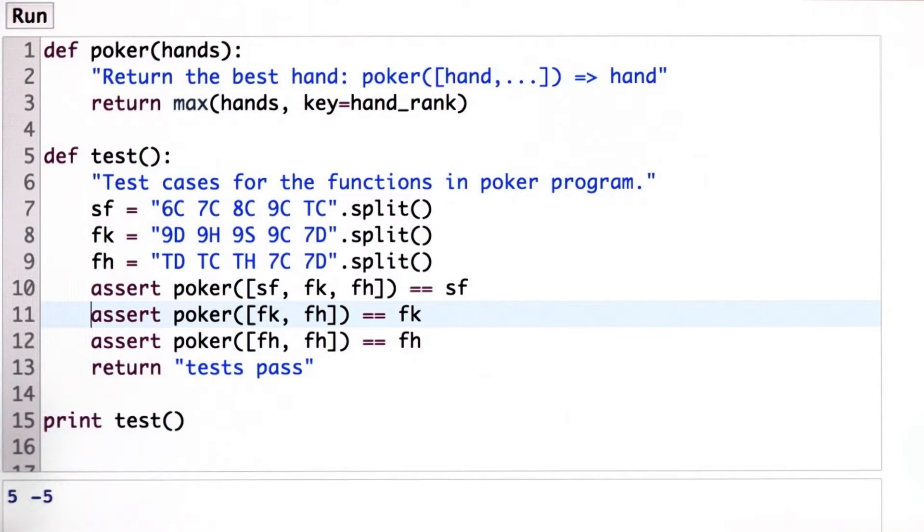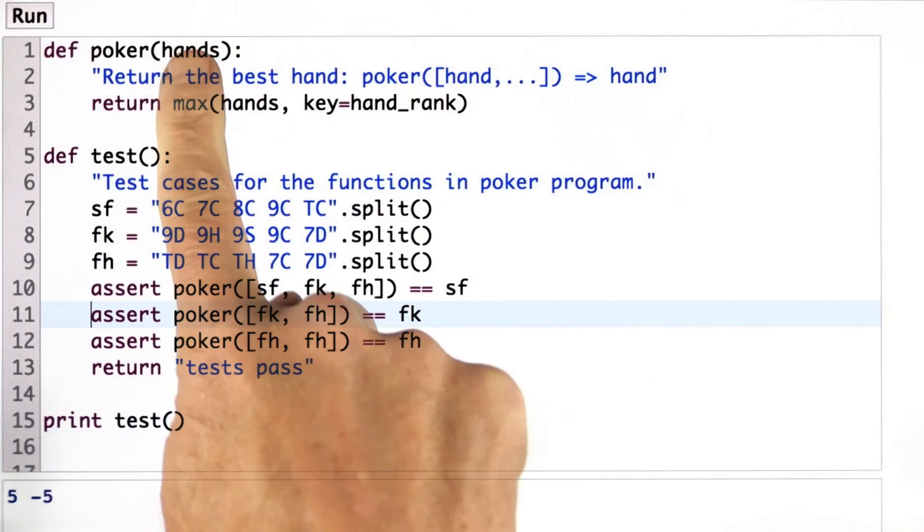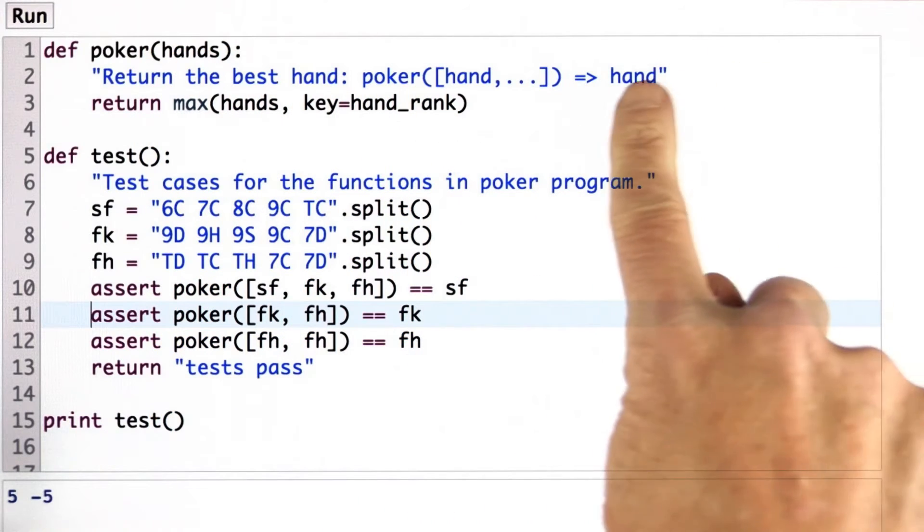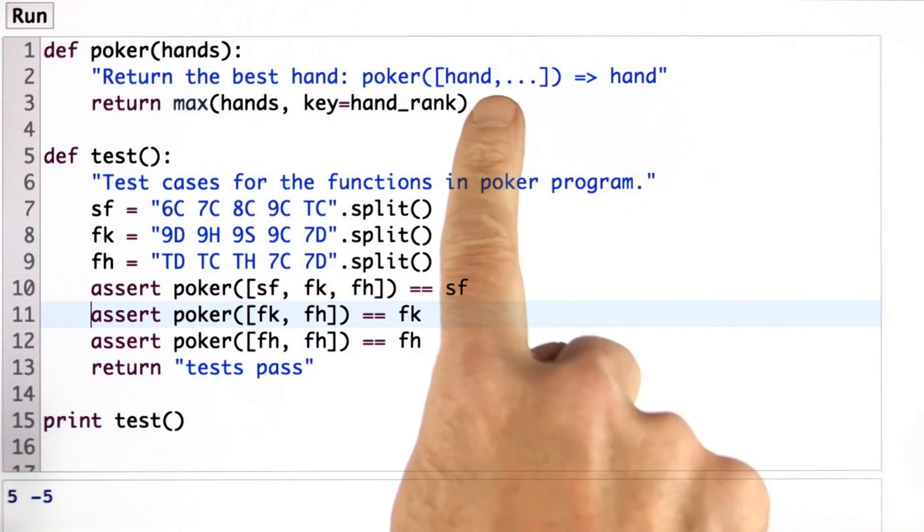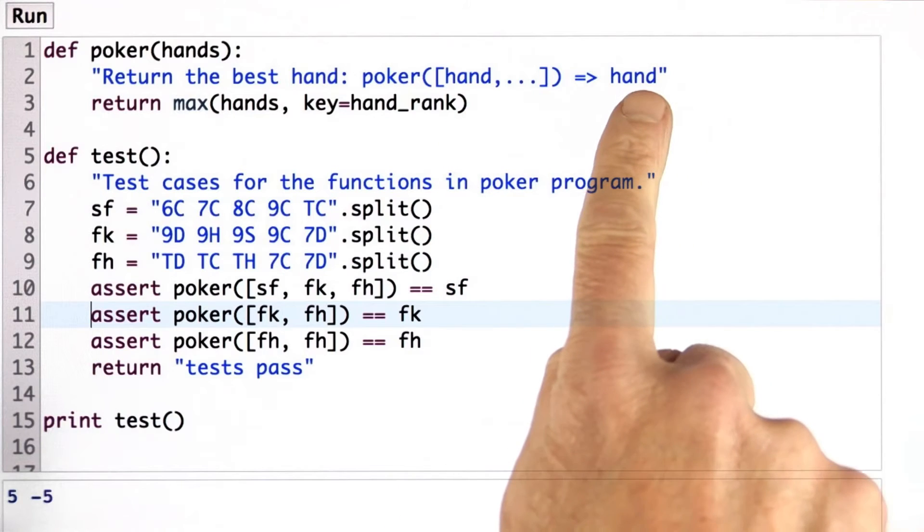Now, what about zero hands? The specification doesn't say. But it does say that the function poker is supposed to return a hand. And if we pass it a list with nothing in it, then there's no hand to return.